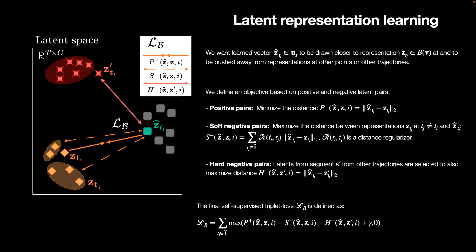We also want to pull apart encodings at other different locations or from different trajectories. Therefore, we define three pairs.